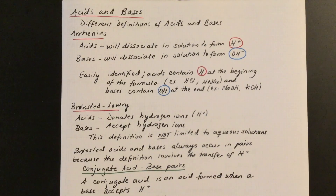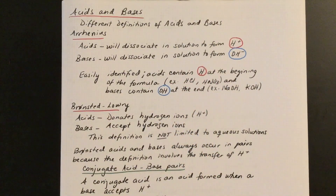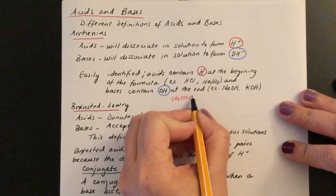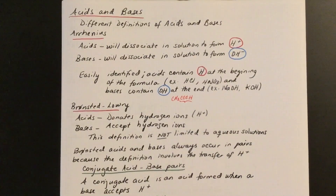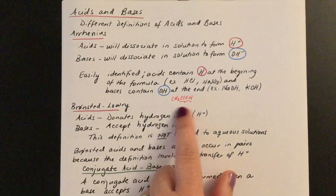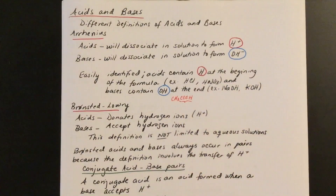For Arrhenius bases, the concept is similar — the basic character comes from dissociation, but instead of giving a proton in solution, a base forms the hydroxide ion OH⁻. Now, it's not always true that the acidic proton appears at the start of the formula. Depending on how you write the formula, you might have that proton at the end. For example, acetic acid contains a carbonyl group (C double bond O) followed by a hydroxyl group OH. Some acids are written with the acidic proton at the end, even though there are three protons bonded to carbon — those are not acidic because they're bonded to carbon.